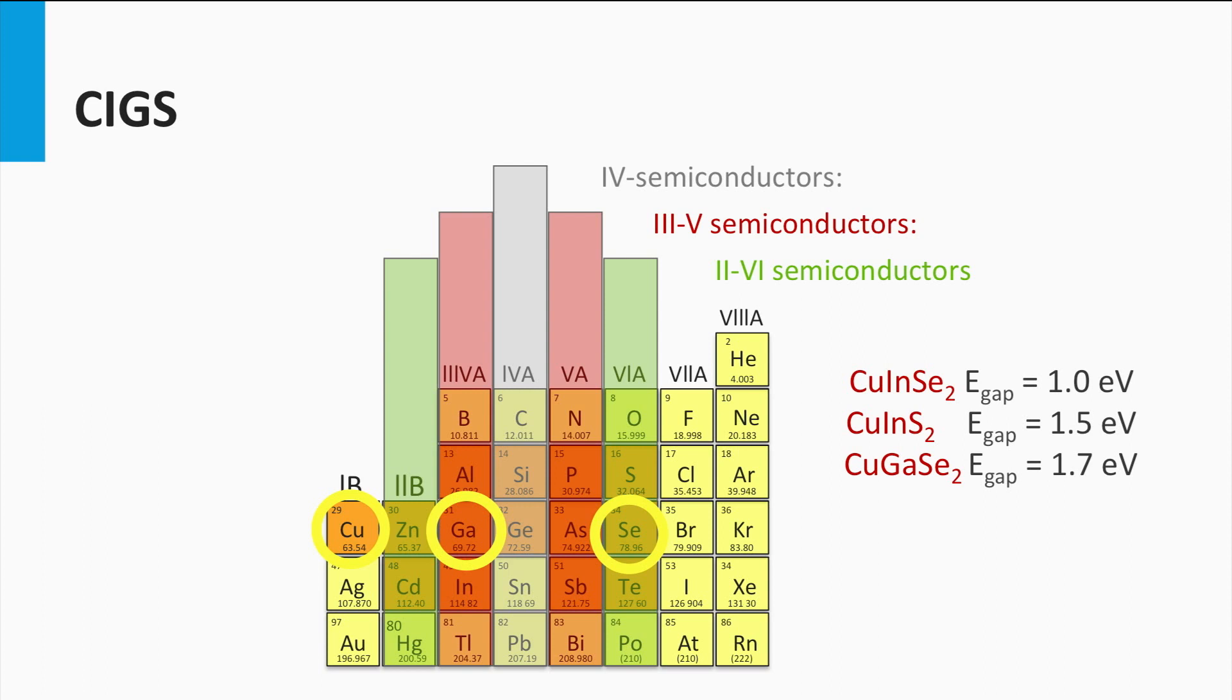These materials cover a wide range of both band gaps and lattice constants. The CIGS material is a direct band gap semiconductor material, therefore it has a large absorption coefficient.